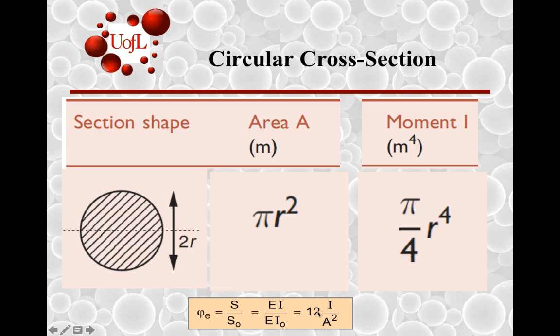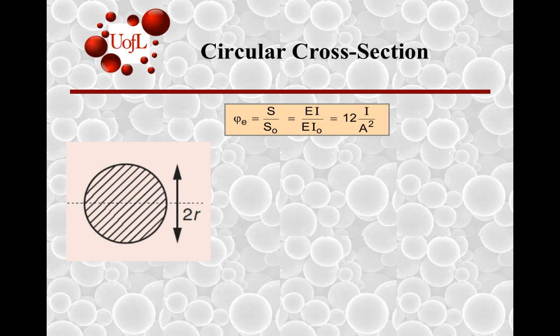Again, in reference to the rectangular cross-sectional area, the shape efficiency factor is 12 times I divided by A². If you introduce I into this equation and A² as the square of the term, what we see is all this drops out to 3 divided by π, which is almost 1 since π is 3.14. So that's the shape efficiency factor for a circular cross-section relative to a square cross-section.